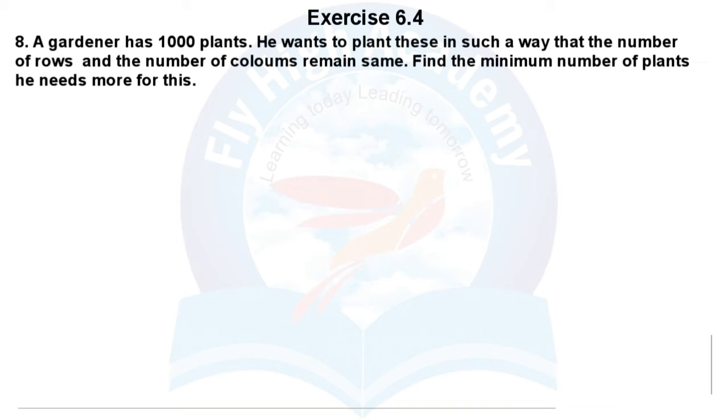Now coming to question number 8. A gardener has 1000 plants. He wants to plant these in such a way that the number of rows and number of columns remain the same. Find the minimum number of plants he needs more for this.